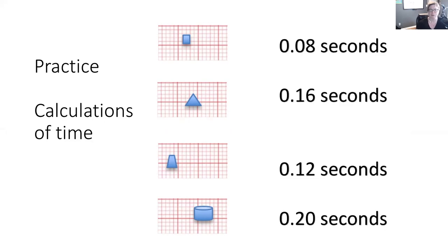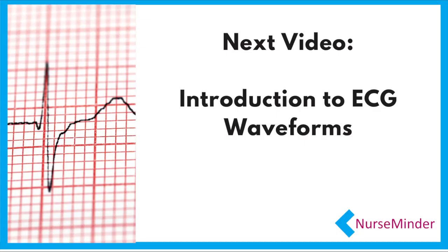The answers: number one is 0.08 seconds, number two is 0.16 seconds, number three is 0.12 seconds, and number four is 0.20 seconds. Now that we have the basics of ECG paper and how to use calipers, it's time to move on to the ECG waveforms.